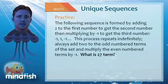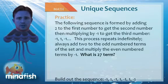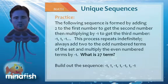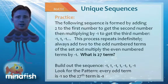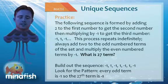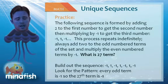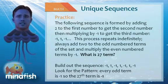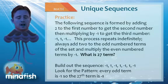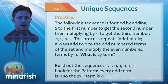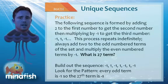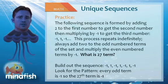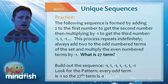So we want to follow these three steps to solve unique sequences. First, we want to add at least three more terms. So we're going to write out another 1, negative 1, 1. Then we want to break the sequence down into a repeating pattern. Here the repeating pattern is just negative 1, 1, negative 1, 1. What you can see is that every odd term is negative 1, every even term is 1. And now if we're looking for the 27th term, it's easy. It's an odd term, and so it's going to be negative 1. The pattern is the thing that repeats over and over again.